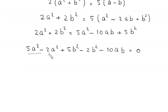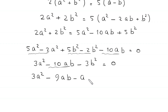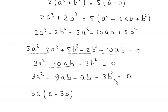This gives us 5a² - 2a² + 5b² - 2b² - 10ab = 0, which simplifies to 3a² - 10ab + 3b² = 0. We split -10ab as -9ab - ab to help with factoring: 3a² - 9ab - ab - 3b² = 0.